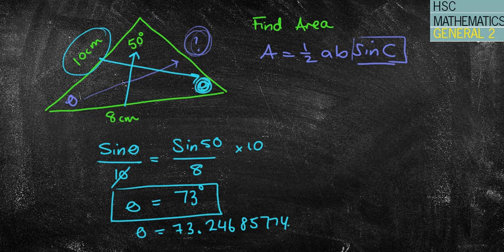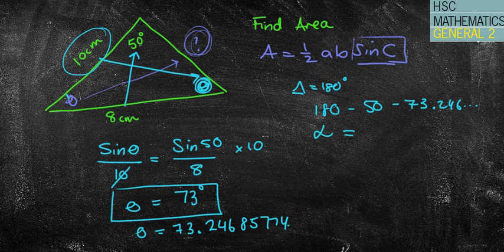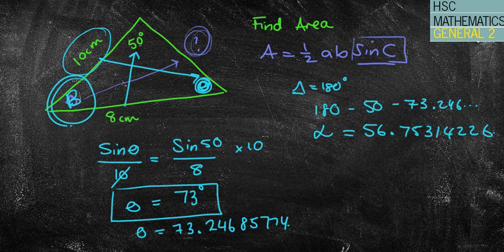Now I've used this angle inside here. So how is that going to help me? Because I don't know what this side is. So I still can't use the area rule. What I can do is now using angle sum of a triangle equals 180 degrees. I'm going to say 180 subtract 50 degrees subtract this 73.246 and I'm going to be left with this angle inside here. We'll call that beta. So 180 take away 50, take away the answer to that last one. I get 56.75314226. So that's what this angle is here.